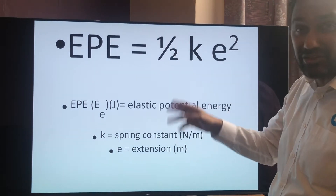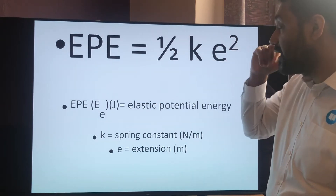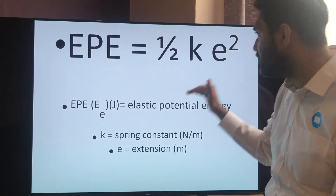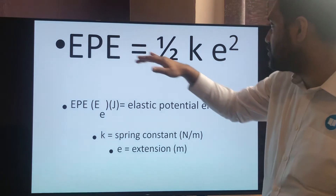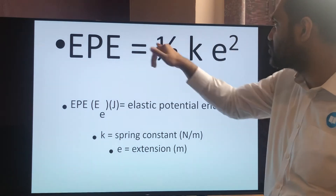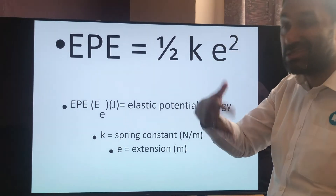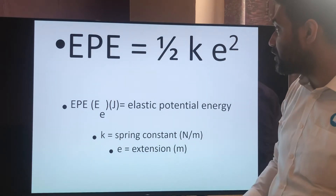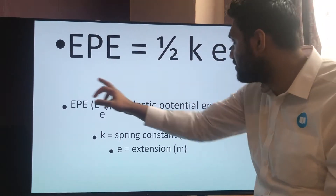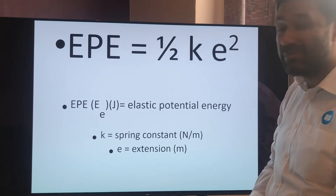Trickier questions require you to rearrange the formula, just like with half mv squared. Usually you just calculate EPE directly. But if you need to work out the extension, multiplying by 0.5 is the same as dividing by 2, so rearrange to get: extension squared equals 2 times EPE divided by K, then square root the whole thing. That's your higher paper — grade 6 or 7 type question. To find the spring constant, rearrange to get K equals 2 times EPE divided by extension squared — also around grade 6.